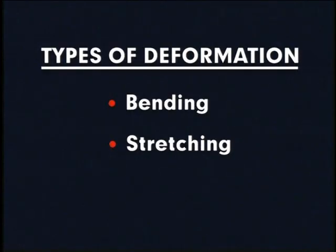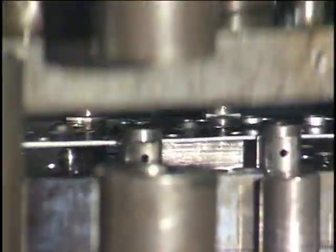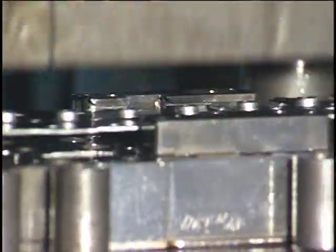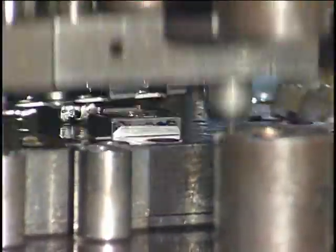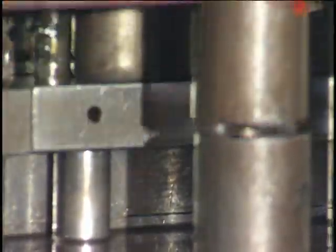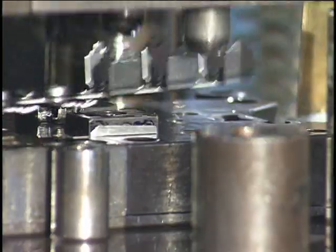Stretching and/or drawing. Part shape largely determines the relative severity of the sheet metal's formability, especially where drawing and stretching occur. But other factors also influence formability.